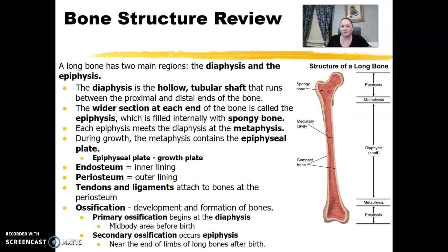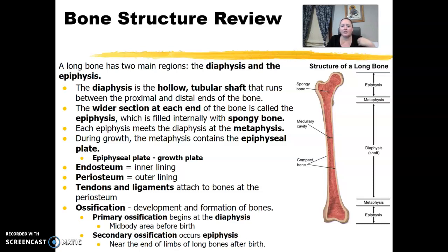Just a review of some bony structure — terminology that we should put back in our brains. The two main regions of the long bones are the diaphysis and epiphysis. The diaphysis is that hollow tube shaft that runs between the proximal and distal ends. The wider section at each end is the epiphysis, filled with spongy bone. Where they meet is the metaphysis — meet with an M, I always think of that.